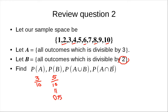P(A union B) — the number divisible by 2 or 3 — the answer is 7 over 10. And P(A intersection B) — the number divisible by both 2 and 3 — that's 6, so you get 1 over 10. Alright, that's just the review question.